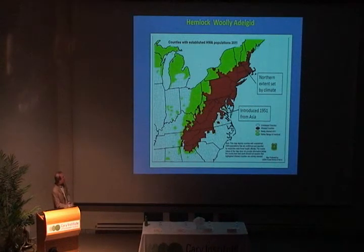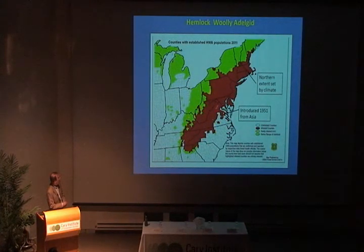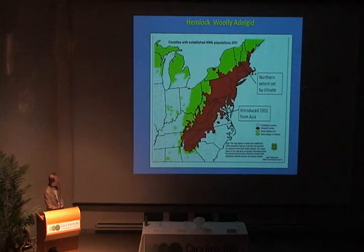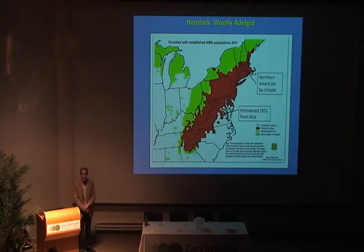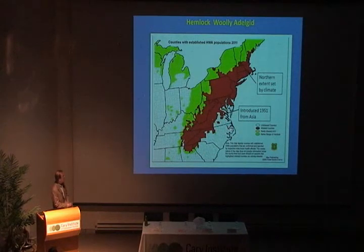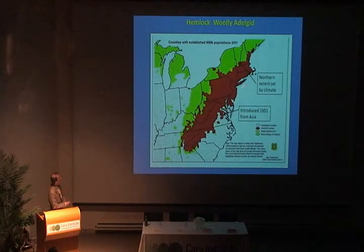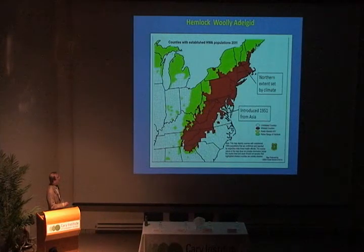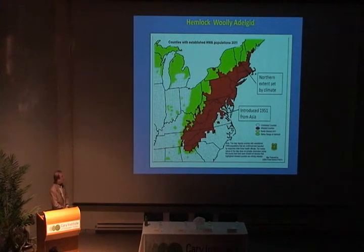Let's talk about where hemlock is and where the bug has spread. The green on this map is the distribution of hemlock in the eastern U.S. The brown and yellow show where this bug has been distributed. It was originally introduced in 1951 near Richmond, Virginia — assumed to have been brought in on a Japanese or Chinese hemlock planted on someone's property. It spread slowly at first, then spread rapidly through the mid-Atlantic states in the 1980s. Most larger hemlock stands have died in New Jersey and southern New England. The northern end of the bug's range is right about here now, a little north of us.